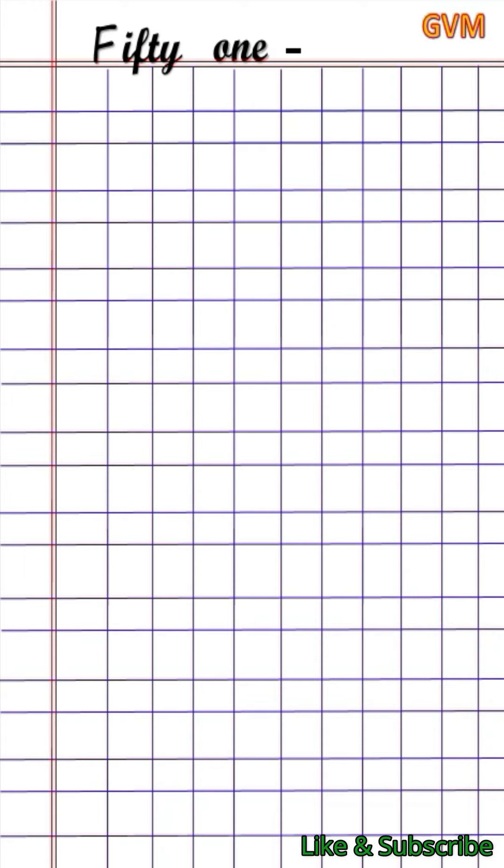Aapko top line ke upar se write karna hai. Here, F should be capital: F-I-F-T-Y, fifty, then give some space and write O-N-E, one — 51. Children, aapko yeh O small letter mein write karna hai. Then thoda sa space dekar ek dash lagayenge, aur uske baad 60 ka number name write karenge: S should be capital, I-X-T-Y, sixty. So children, this is our today's topic.